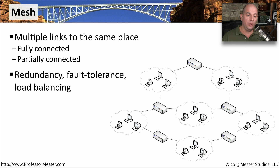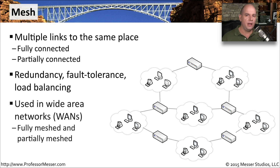You might also be able to do load balancing — sending traffic over multiple links simultaneously, taking advantage of all of these redundant links. It's very common to see mesh topologies on wide area networks since we have very little control about what's happening with the network outside of our buildings. This way, we can build multiple links to a single site, and if we lose one of those links, we still have the other as a redundant link.